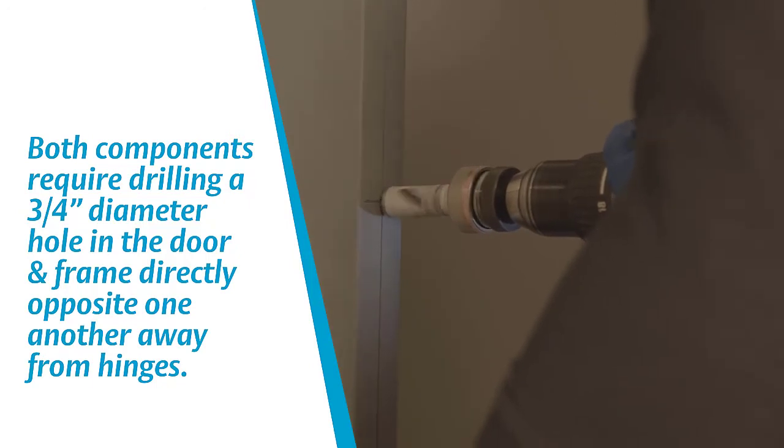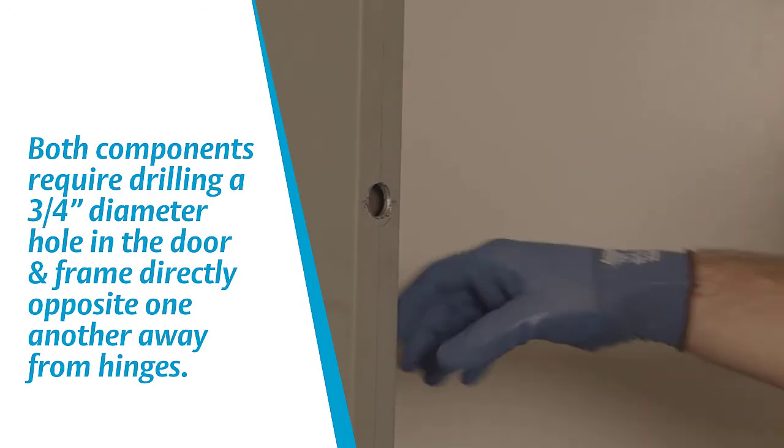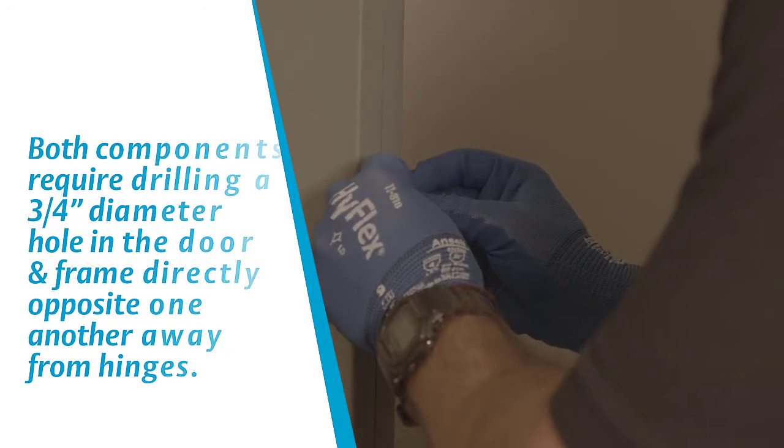The two pieces should be installed in the door and frame directly opposite one another. Using the same 3/4 inch hole saw, install the magnetic contact in the door.